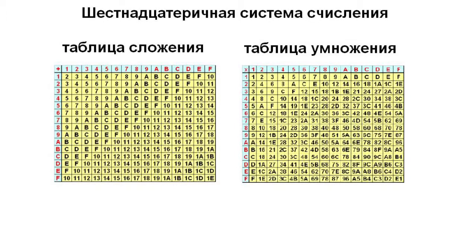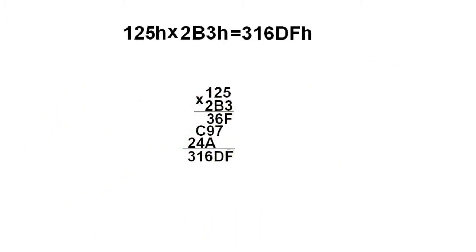If you write down the tables of addition and multiplication in the hexadecimal system, you can perform operations with digits in the same way as in the decimal system. For example, let's consider multiplication of 125 by 2B3.